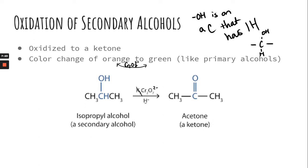The reaction is also typically carried out in the presence of an acid, which is why H⁺ is included. What happens is that the secondary alcohol becomes a ketone — the hydroxyl group loses its hydrogen and you get a double-bonded oxygen in the middle of the chain. So secondary alcohols produce a ketone.